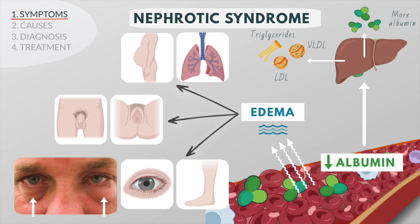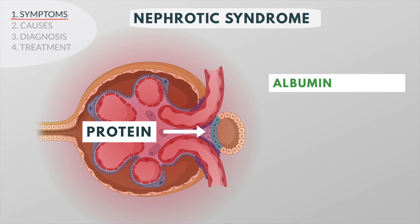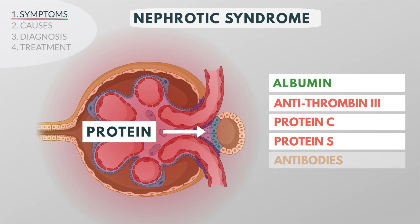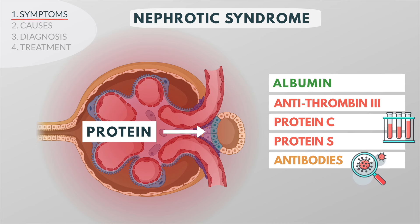Typically, periorbital edema is noted first and is often misdiagnosed as an allergy. Apart from albumin, there will also be a loss of proteins that help prevent clotting and antibodies that normally fight infections. This can lead to blood clots and infections.